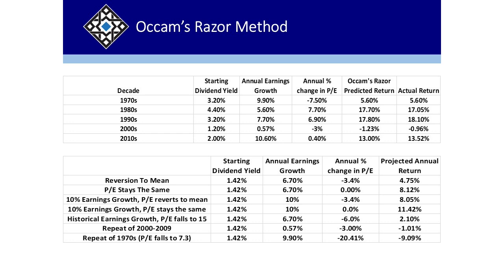Right now, depending on your assumptions: if there's a reversion to the mean and the PE goes back to its long-term average, projected 10-year returns are 4.75%. If the PE stays the same, the return is 8% — not bad. With 10% earnings growth reverting to the mean you get 8%; with 10% growth and PE staying the same, you get over 11%. But if you get historical earnings growth and the PE falls to 15, your annual return is about 2%. If you repeat 2000 to 2009 — an inflationary period where the dollar was falling — expected return is minus 1%. And if you repeat the 1970s, which we think is possible, your annual return is going to be minus 9%.